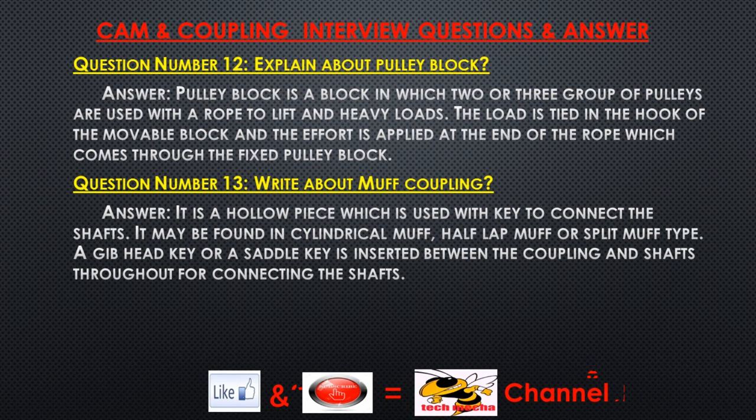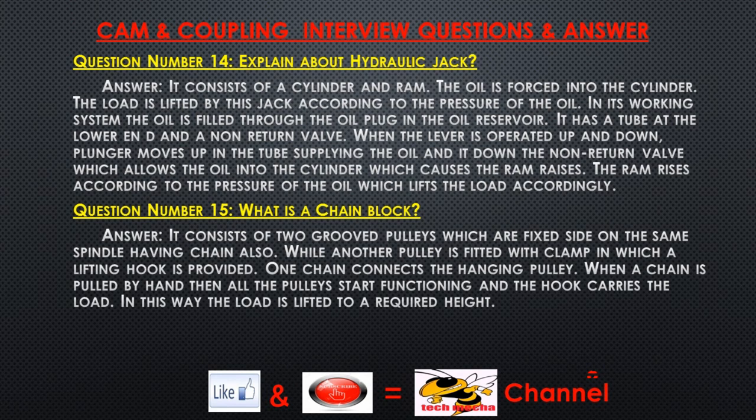Question number thirteen: Write about muff coupling. Answer: It is a hollow piece which is used with a key to connect shafts. It may be found in cylindrical muff, half-lap muff, or split muff type. A jib head key or saddle key is inserted between the coupling and shafts throughout for connecting the shafts.